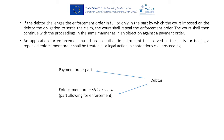Depending on which part the debtor attacks, the continuation of the process differs. If the debtor attacks the payment order, it will proceed as a usual objection against the payment order, moving to litigation where the court adjudicates on the claim. If the debtor attacks only the enforcement order stricto sensu, then the procedure will continue as an objection against the enforcement order.